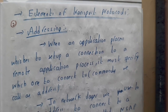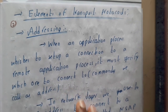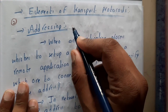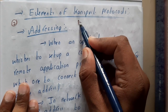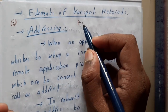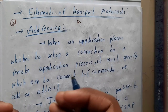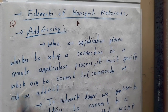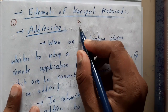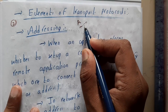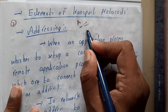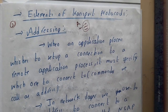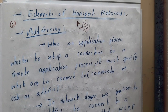Hello guys, we are back with our next lecture. In this lecture, let us go through the elements of the transport layer. We'll be discussing about addressing, how connections are made, how data is transferred, and after that, the termination of the connection. So we'll be discussing these four topics.